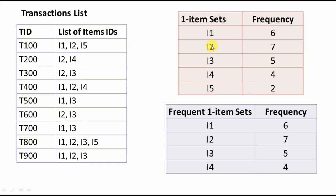There are 5 items: I1, I2, I3, I4, and I5. In the frequency column, we count the number of times each item was bought. If you count item I1, it appears 1, 2, 3, 4, 5, 6 times — so it was bought 6 times. Similarly, I2 appears 1, 2, 3, 4, 5, 6, 7 times — item I2 was bought 7 times. We need to identify and count the number of times I3, I4, and I5 were bought and write those values.